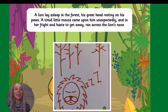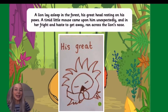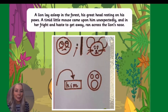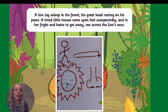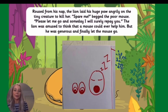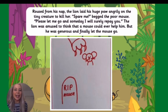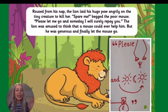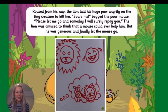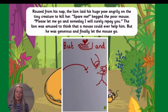The lion lay asleep in the forest, his great head resting on his paws. A timid little mouse came upon him unexpectedly, and in her fright and haste to get away, ran across the lion's nose. Roused from his nap, the lion laid his huge paw angrily on the tiny creature to kill her. Spare me, begged the poor mouse. Please let me go and someday I will surely repay you. The lion was amused to think that a mouse could ever help him, but he was generous and finally let the mouse go.